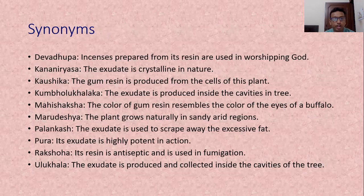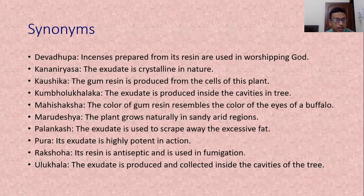The important synonyms of Gugul: Devdhupa means the incense or Dhopa prepared from the resin of this plant used for worship. Kananiriyasara — Niriyasara means exudate; the exudate is crystalline in nature, so it is known as Kananiriyasara. Kosika — the gum resin is produced from the cells of this plant, so it is known as Kosika.